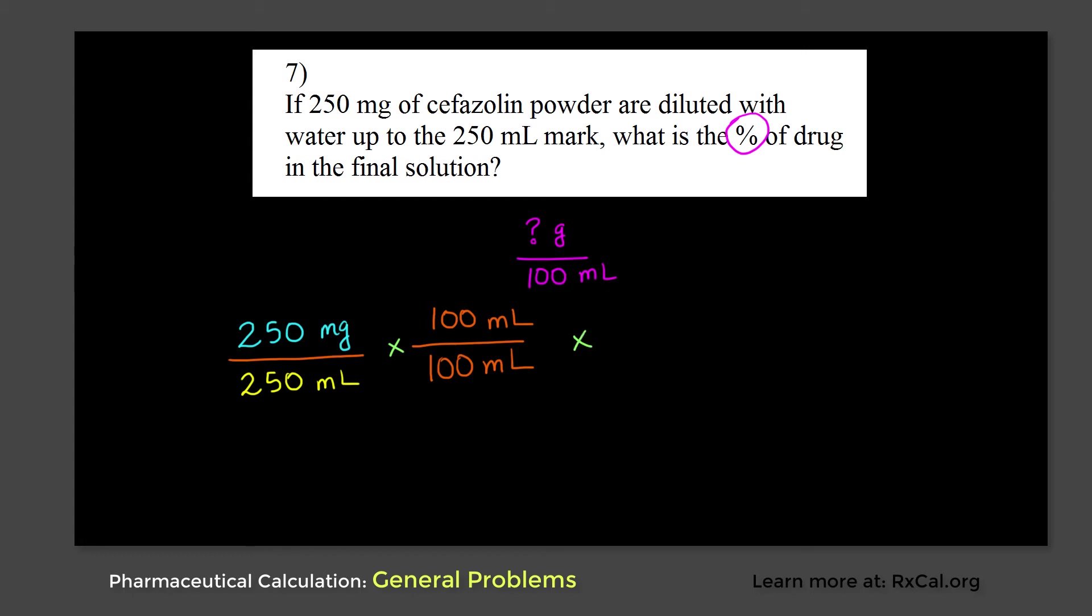So we're going to multiply this, and we need to convert the milligram to gram. It's going to be 1 gram over 1,000 milligrams. If you pay attention carefully, this milligram and this milligram cancel out, and this ml and this ml cancel out. We're not going to touch this 100 ml. We're going to leave this 100 ml as it is. And at the end of everything, we'll have a number with a gram over 100 ml as the final unit.